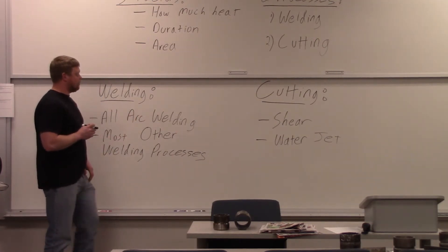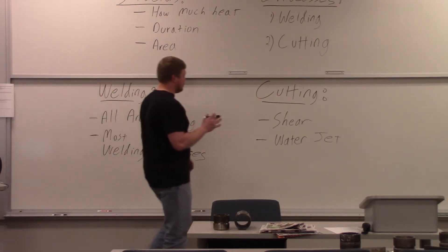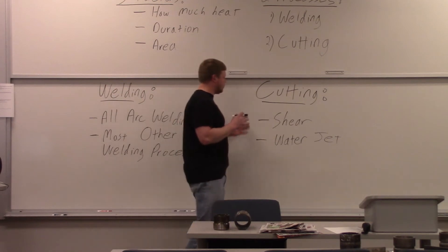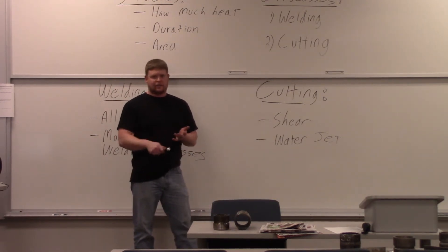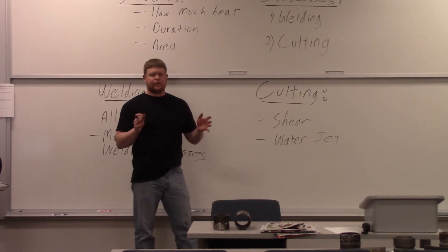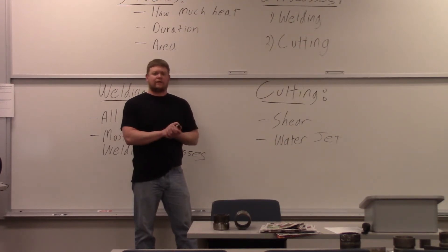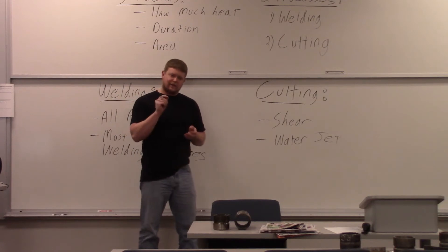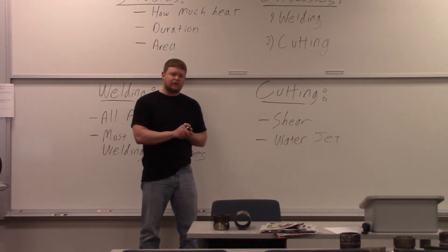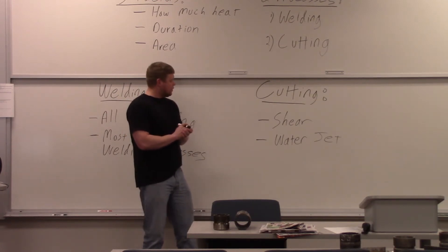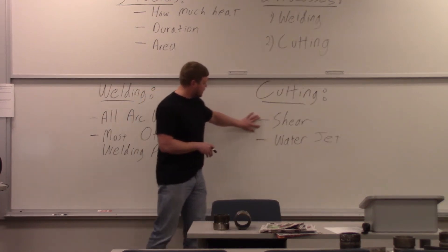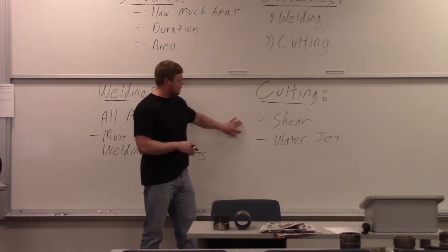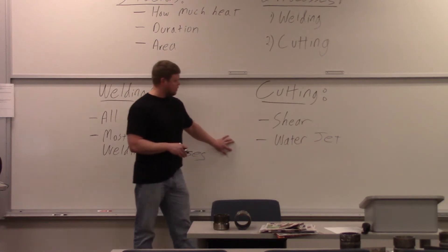For cutting — in the welding world — you're talking about oxyfuel, plasma, laser, and electron beam. All of those have a heat affected zone. People think lasers don't have a heat affected zone, but they do — it's just very, very small, making it a pretty efficient way to cut. The two processes that definitely don't have a heat affected zone are shearing and water jet cutting.